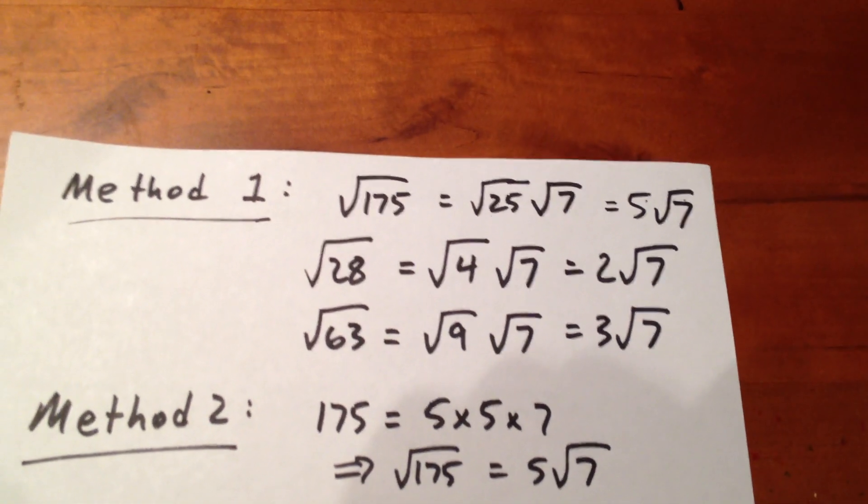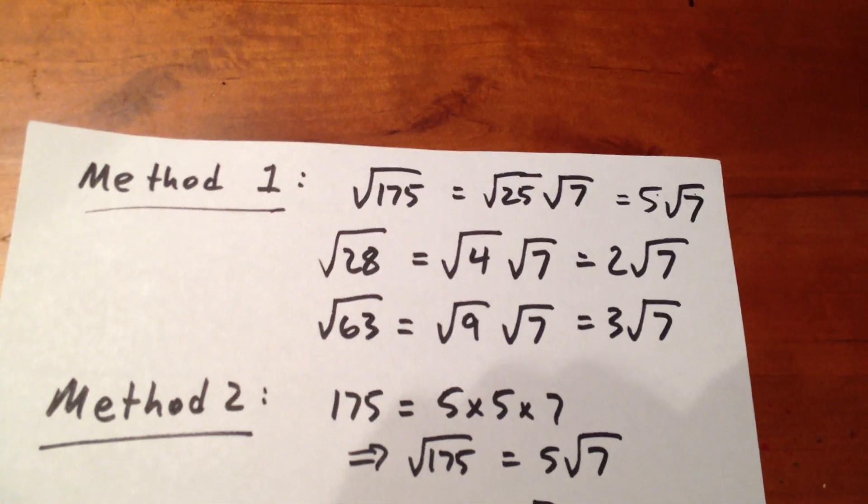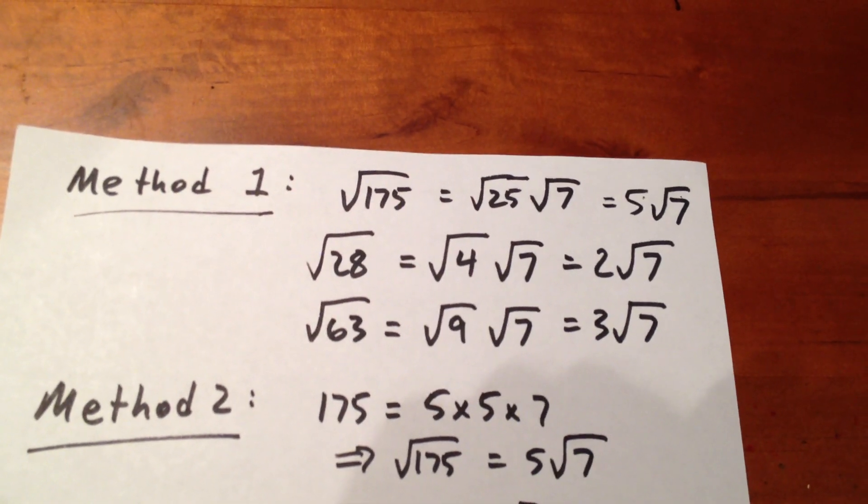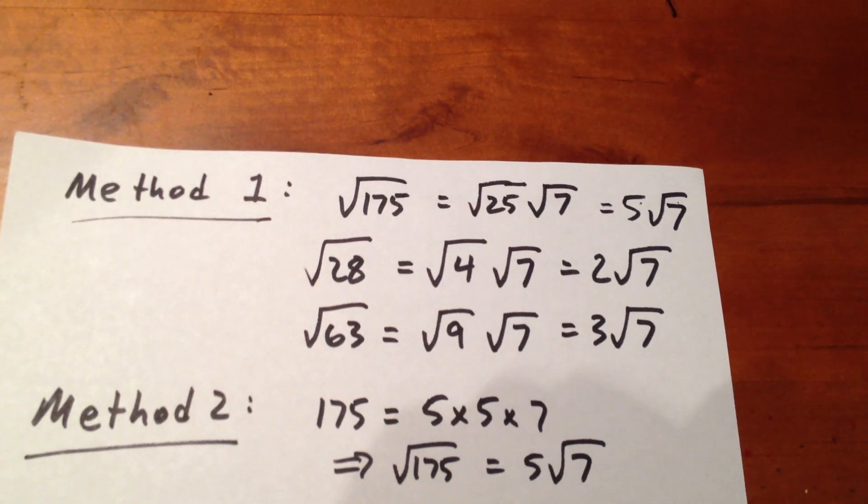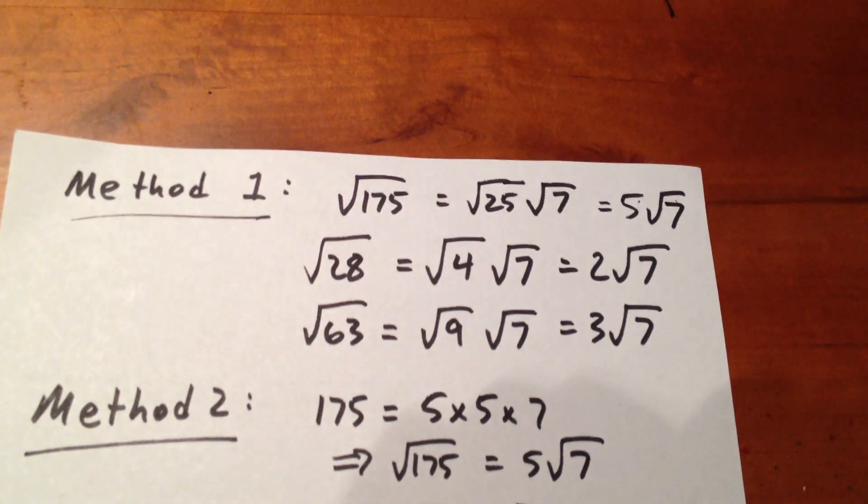We can look at the next irrational term, root 28, and realize that a perfect square of 4 divides evenly into 28, meaning that root 28 is root 4 times root 7, which is 2 root 7.